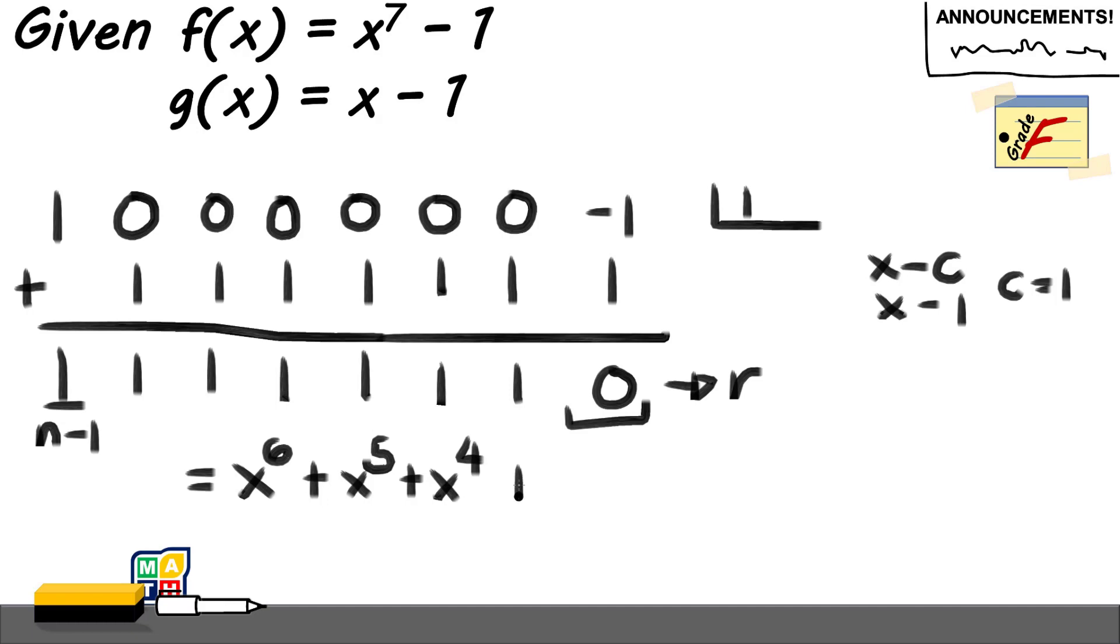Then, plus 1x to the power of 3 or x cubed. Here, plus x squared or 1x squared. Then, another 1x plus 1x. And finally, you have your constant plus 1.